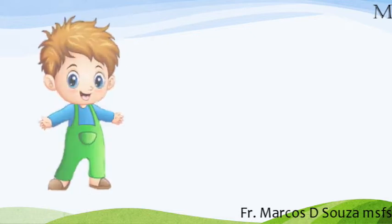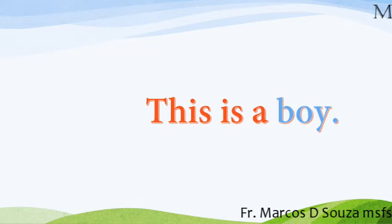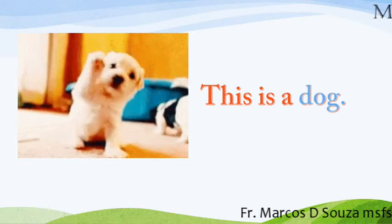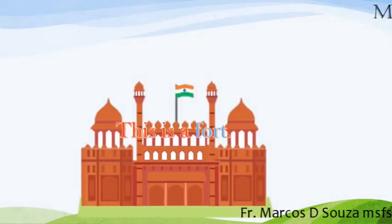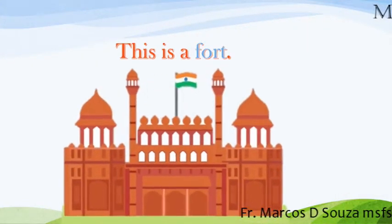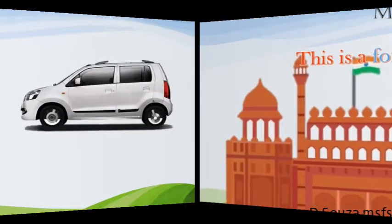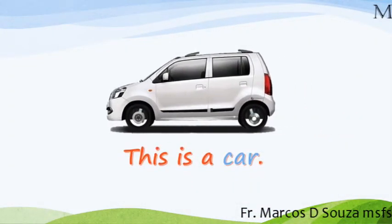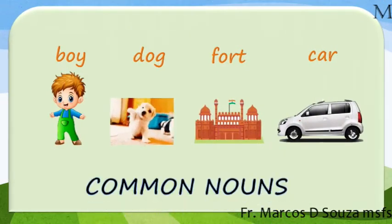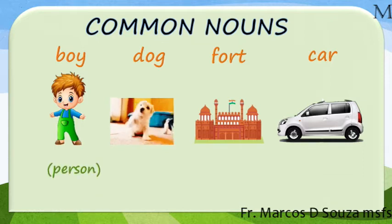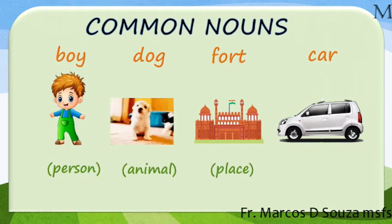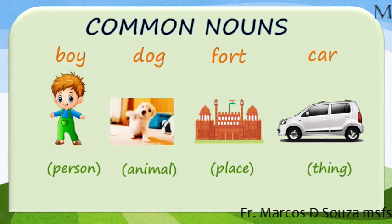Look at the following picture. Identify them. This is a boy. This is a dog. This is a fort. This is a car. All these names are general names of a person, an animal, a place and a thing. These are common nouns.